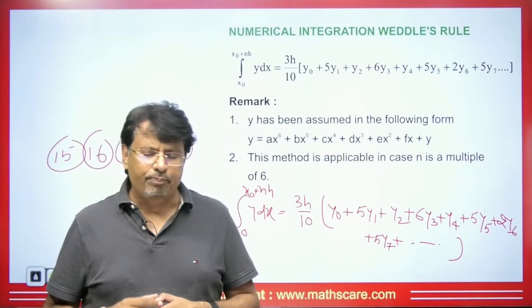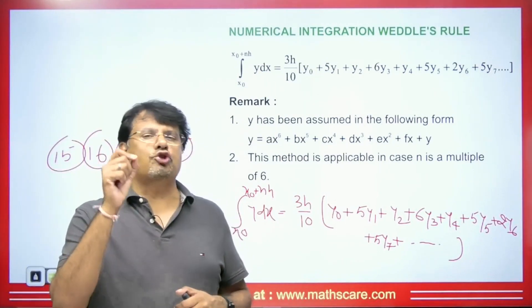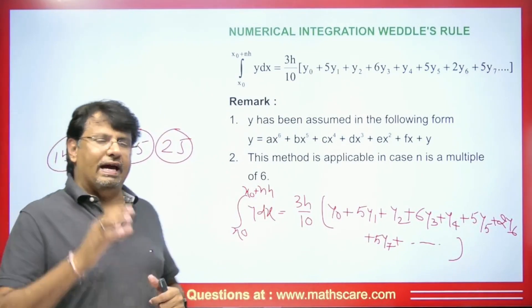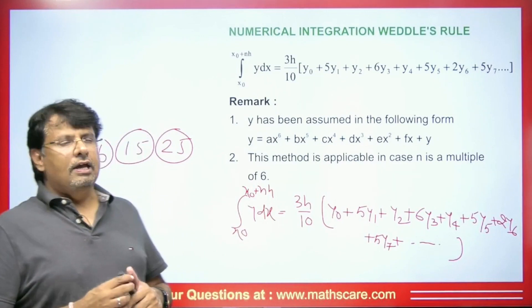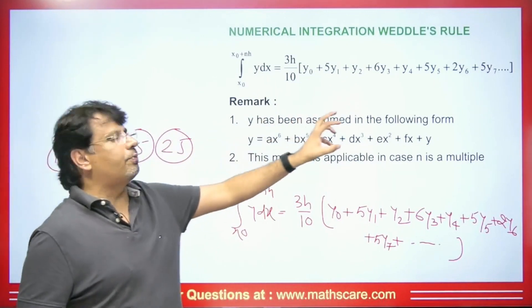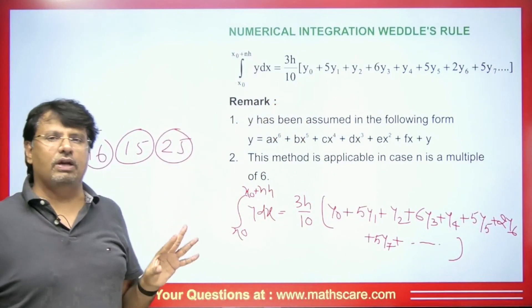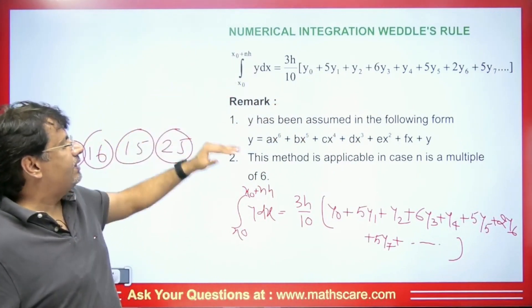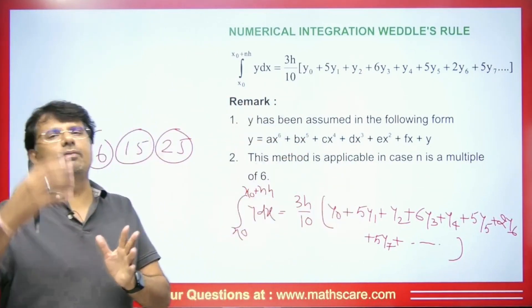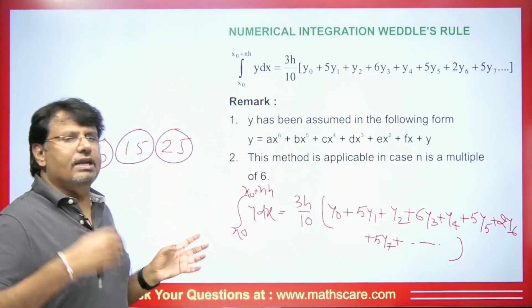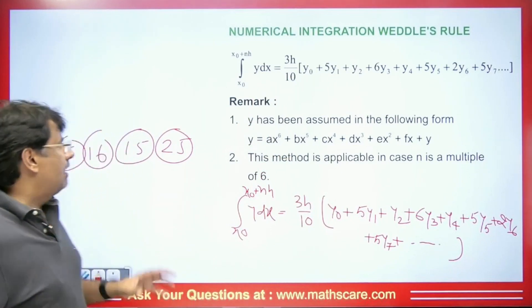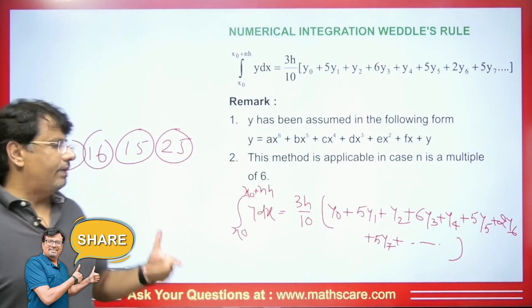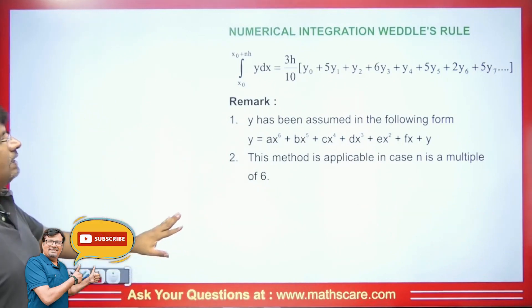Let's talk about Simpson 3/8 formula. In this formula, if we have any cubic polynomial and if we do the integration of that, then there is absolutely no error. That means the exact and approximate values are same. Thus, in Weddle's rule, we have a sixth-degree polynomial here, and its answer comes perfect if we use the formula. If we have been given a sixth-degree polynomial and a limit of integration is given, and if we solve it using this formula, the answer will be same, so try not to forget the formula since it's a typical formula. If you remember it this way, then you can understand it very easily.